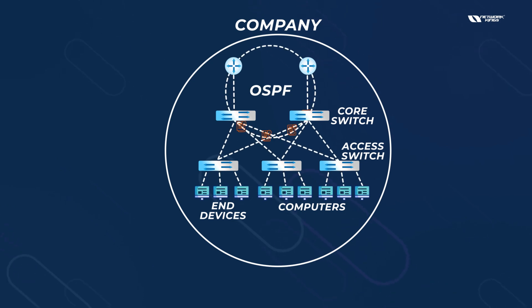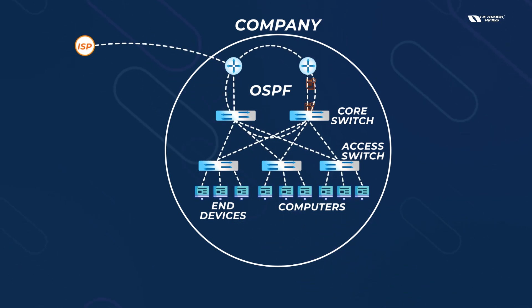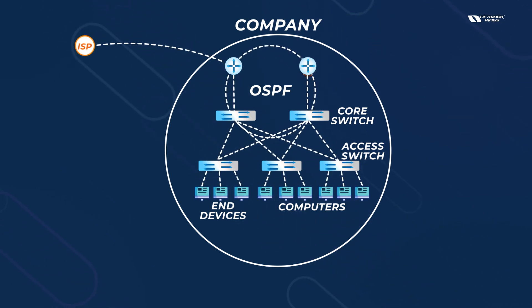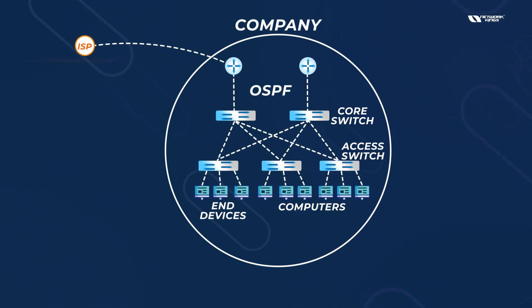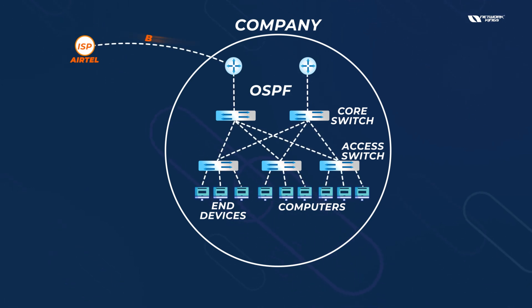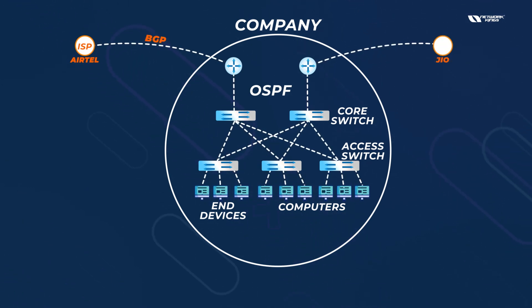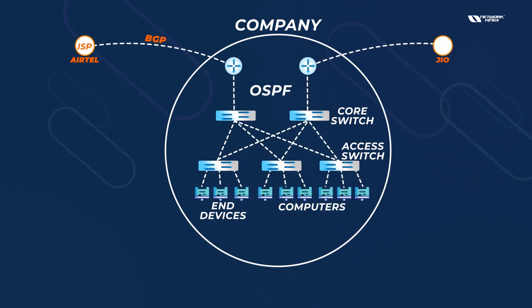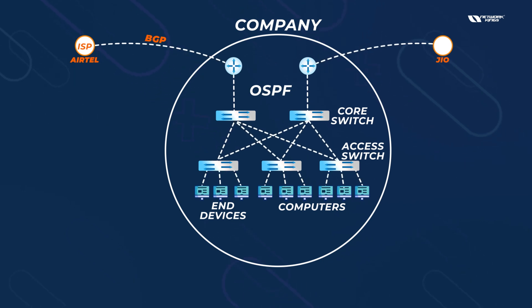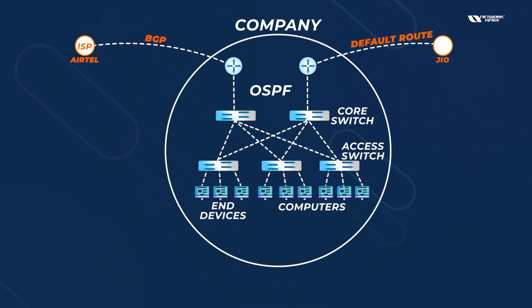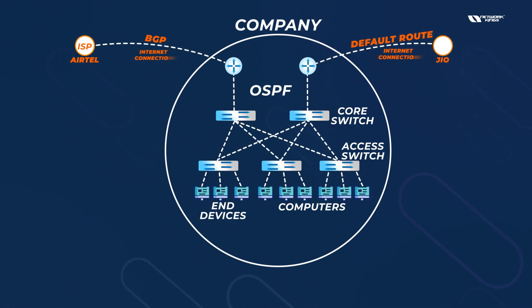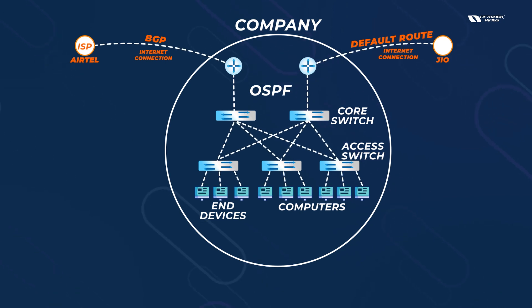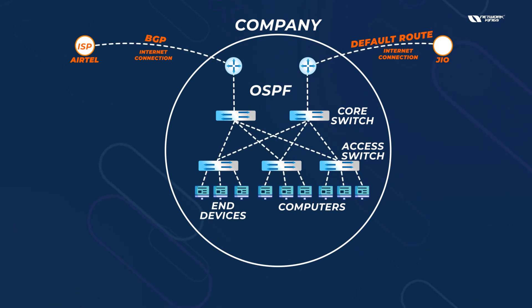After that, if you are connected to an ISP — maybe this is Airtel — here you run BGP. On another side, maybe you have any other company and you are using a normal default route. This is BGP running for your internet connection, and both are your internet connections.